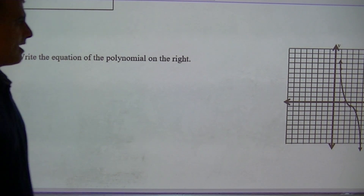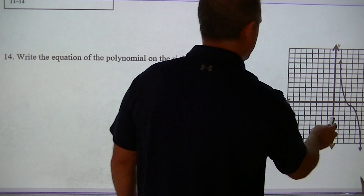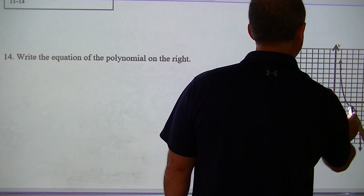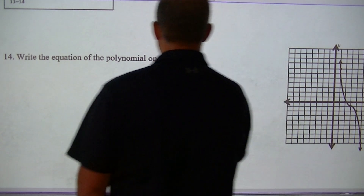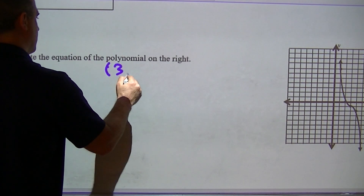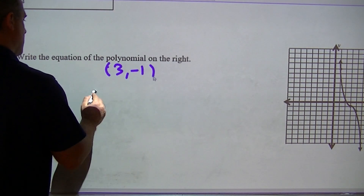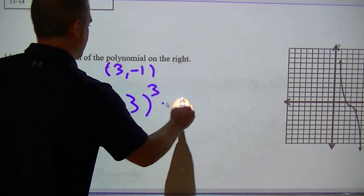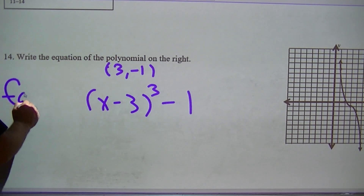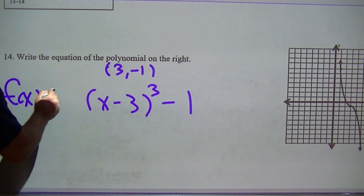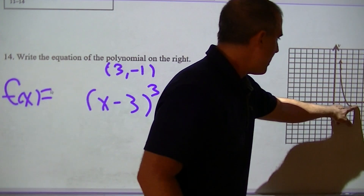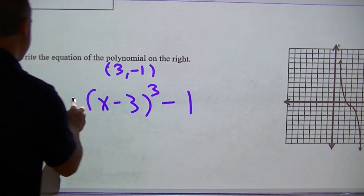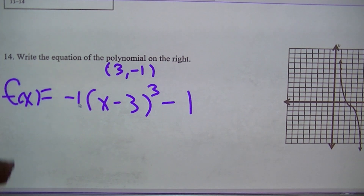Write the equation — this is a multiple choice question. My anchor point is 1, 2, 3 — so the anchor is at (3, negative 1). I would have (x minus 3) cubed minus 1. If I go right 1, I would have to go down 1 to hit that, so I put a negative 1 there.